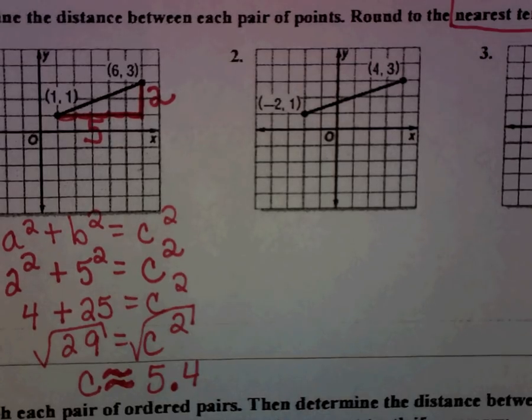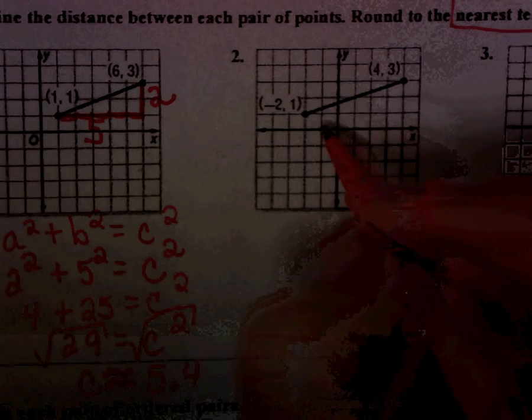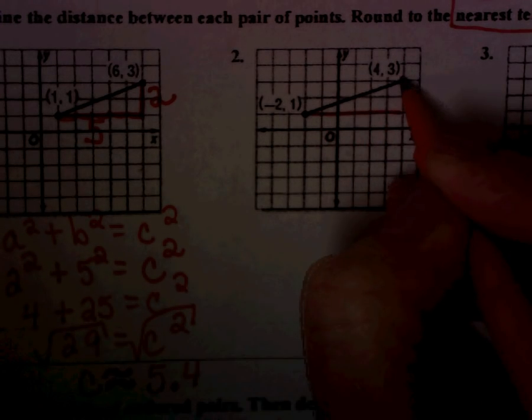Look at number two. See if you can draw the right triangle yourself. Take a minute. Pause it. Draw it yourself. Make sure you have a good right triangle drawn.